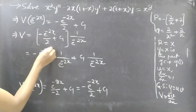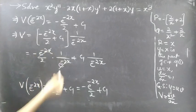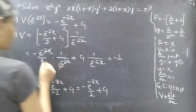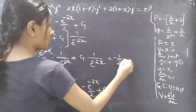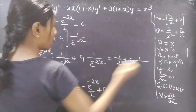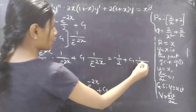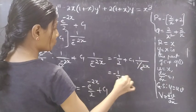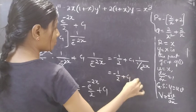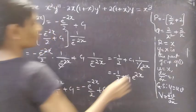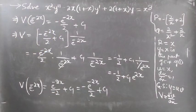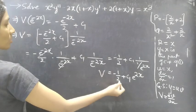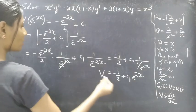Taking e to the power minus 2x to the right-hand side, we multiply both sides by 1 over e to the power minus 2x. Here e to the power minus 2x cancels, and we get V equal to minus 1 over 2 plus c1 times e to the power 2x. So we got capital V equal to minus 1 over 2 plus c1 times e to the power 2x.